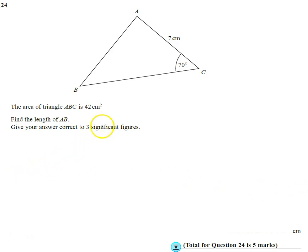Okay, so question 24, the penultimate question. It gives us a non-right angle triangle, so our first thought is possibly going to have to use the sine rule or even the cosine rule.